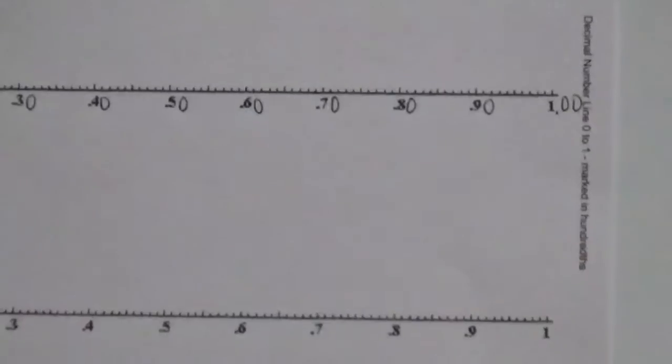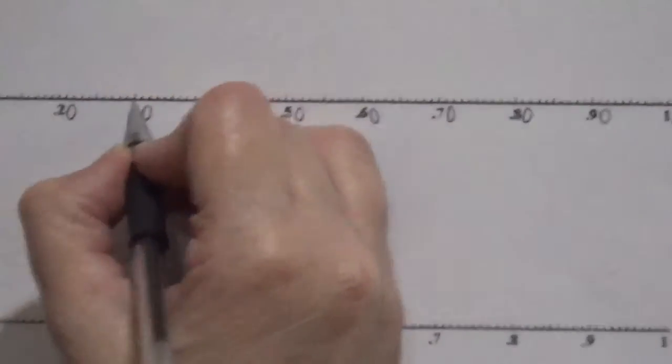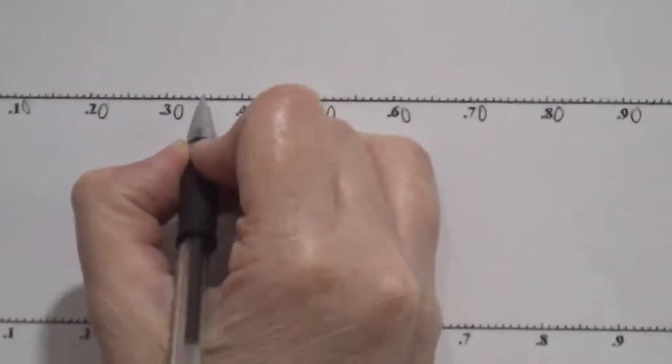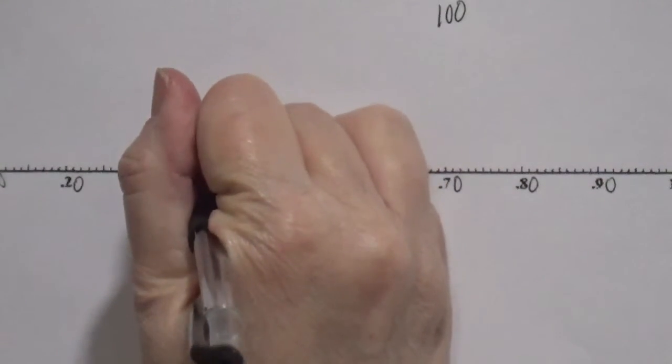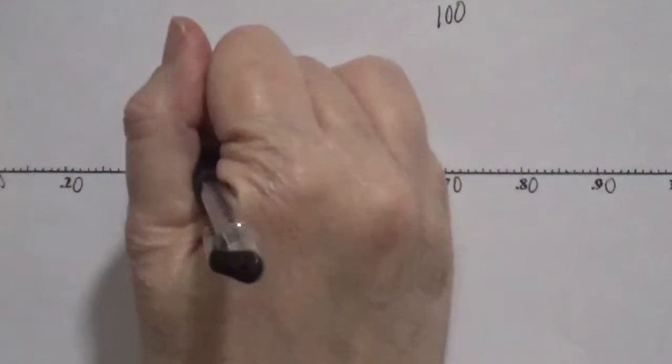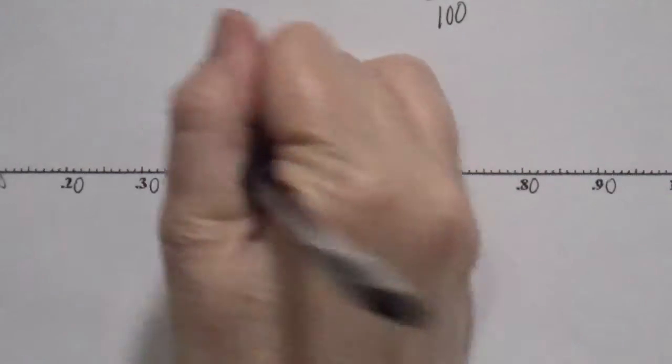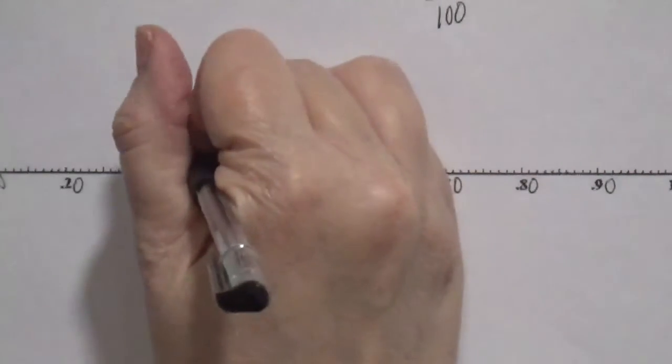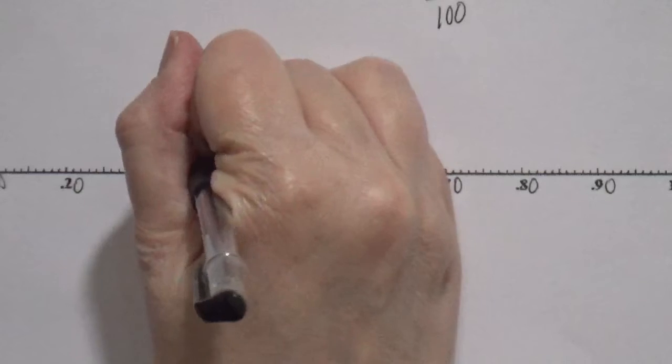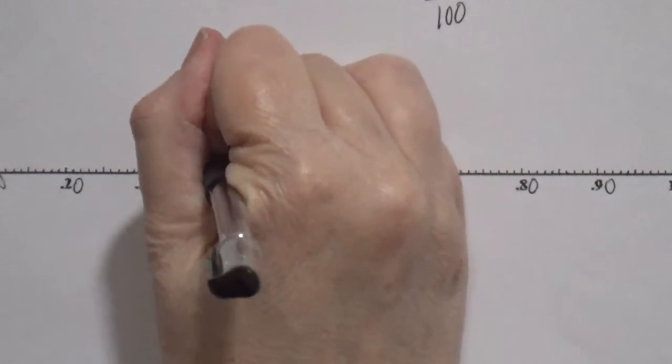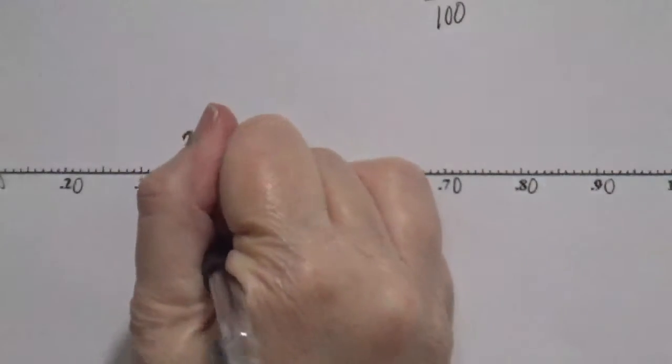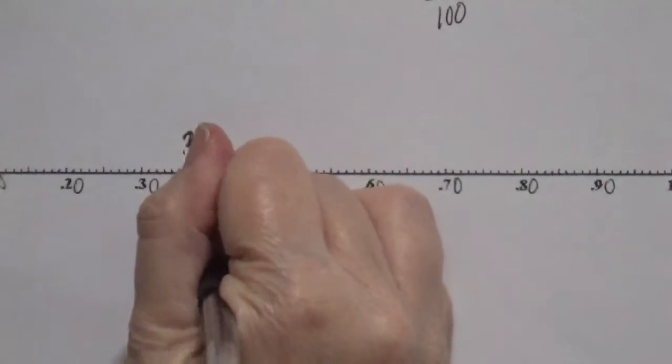So we start at the 30, 1, 2, 3, 4, 5, 6, 7. So exact location, we make our point on the number line. We have decimal 60, or I'm sorry, we have the decimal of 37. Just about messed up there. Decimal of 37 hundredths. And now I have to do the fraction of 37 hundredths.